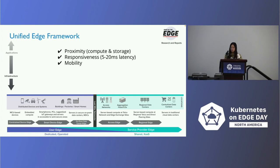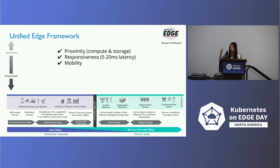How we define a unified Edge framework — this is how ElfEdge is doing it. We think about from infrastructure to application vertically. Horizontally, we have the user Edge all the way to the service provider Edge. Within the user Edge, we have the constrained device Edge, the smart device Edge, the on-premise data center Edge, the access Edge from Telco, and the regional Edge between cities or states.